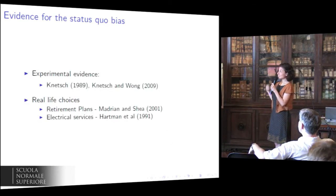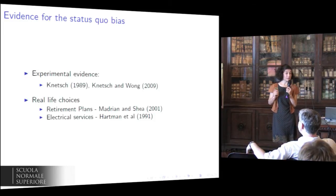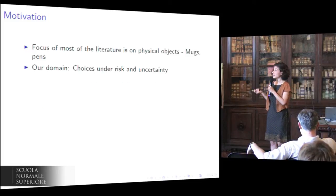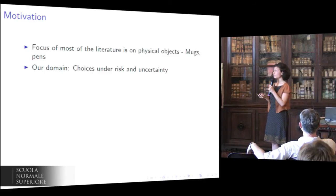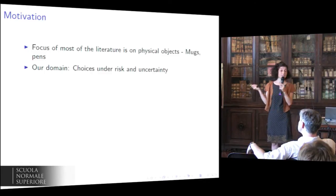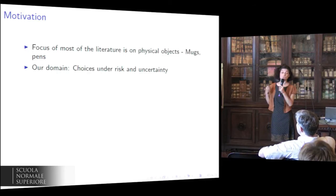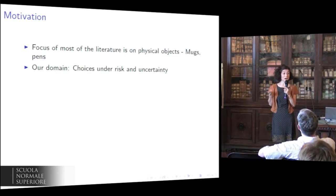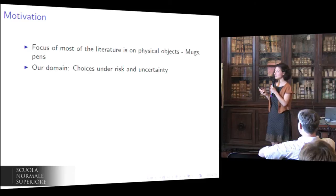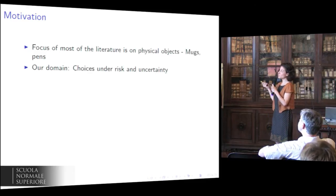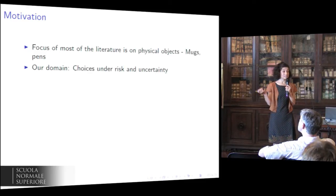The status quo bias is all in the difference between 44% and 90% — the fact that the number of people choosing the candy bar doubled just by virtue of the fact that now the candy bar is in their hand at the time they make the choice. There is a big experimental evidence and also empirical papers looking at real life choices accounting for the presence of the bias. But what is surprising is that the focus of most of the experimental literature has been on physical objects such as mugs, pens, notebooks, and so on. And instead, another domain — choices under risk and uncertainty — has been somehow neglected by the experimental literature. This is specifically the topic of my talk.